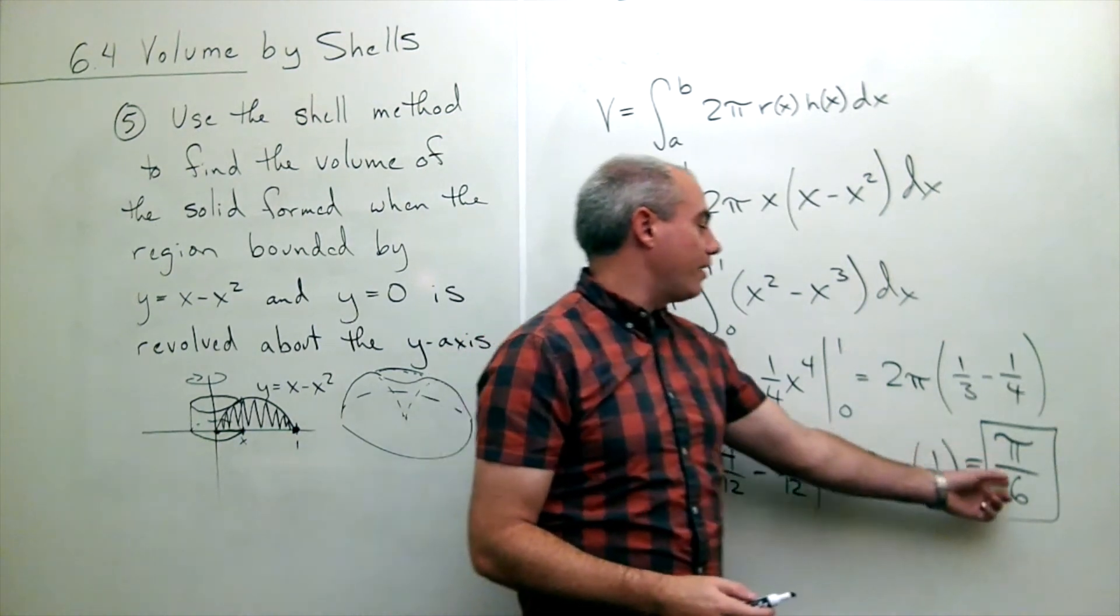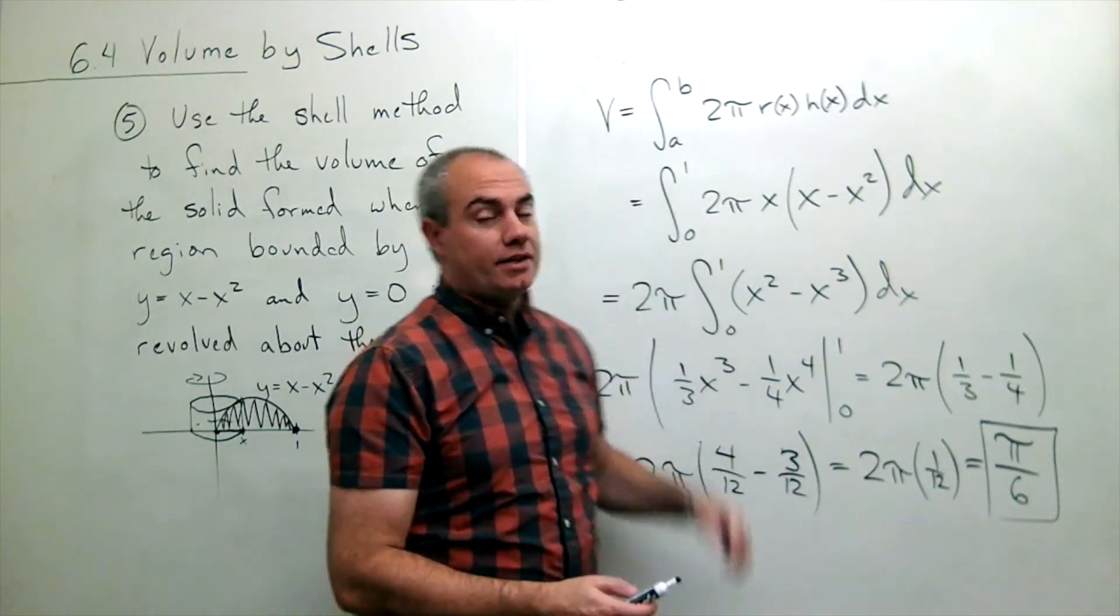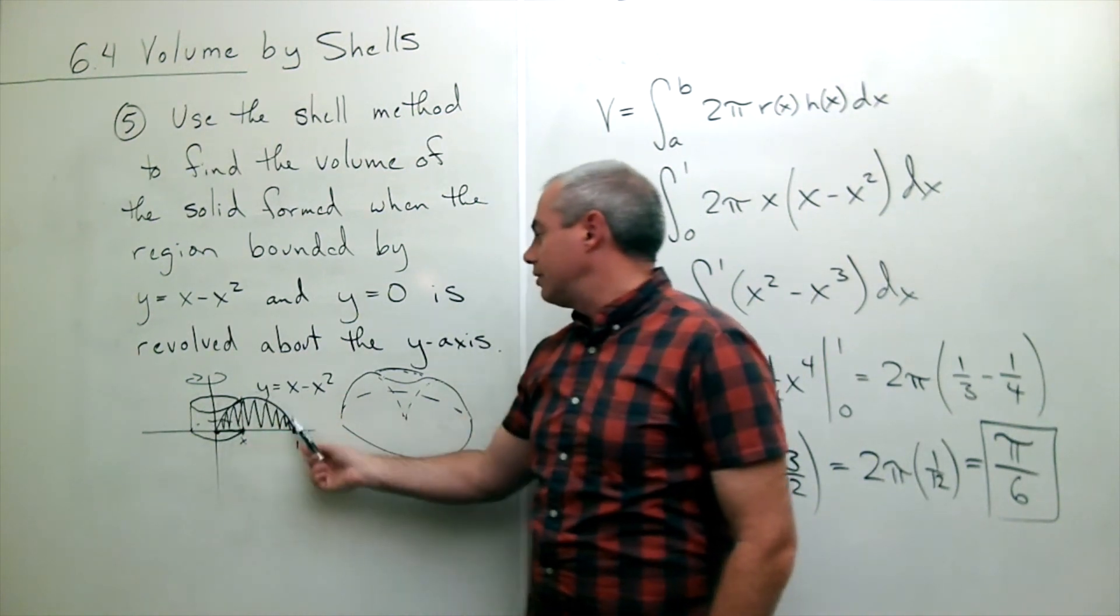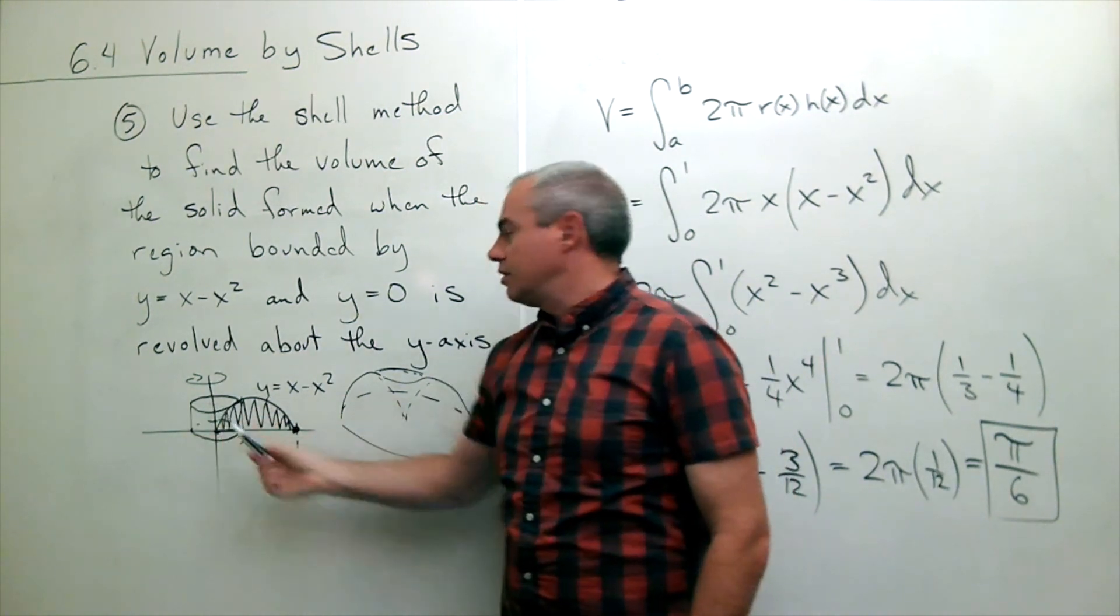So pi over 6 is the volume that I get by taking this parabolic shape and spinning it around the y axis.